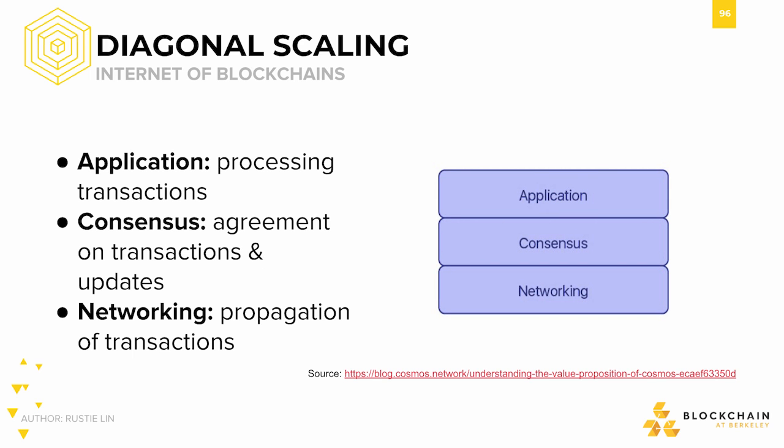Before introducing Cosmos from the scalability perspective, it's nice to take a step back and understand the primitives upon which it functions. Traditionally, you can view blockchains with three main abstraction layers. There's the application layer at the very top that processes transactions and updates to the state of the system, and defines the distributed application that you're building.